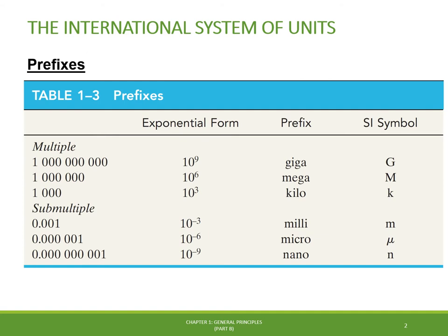Some of the prefixes used in the international system and their symbols are shown in this table. Each row represents a multiple or a submultiple of a unit which, when applied successively, moves the decimal point of a quantity to every third place.